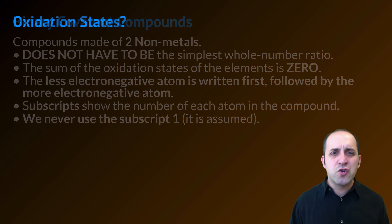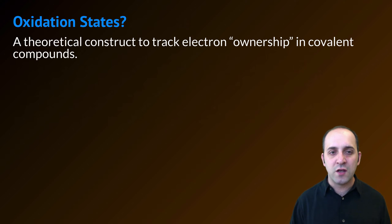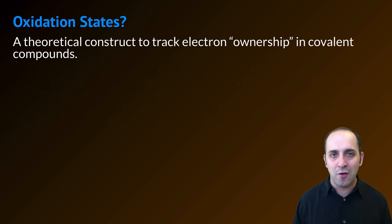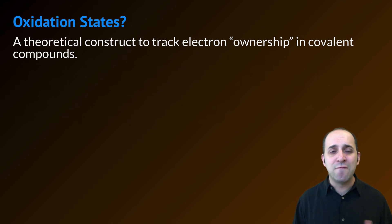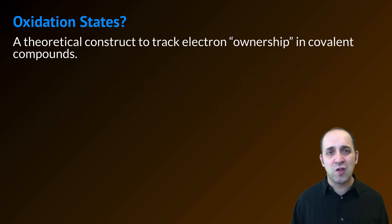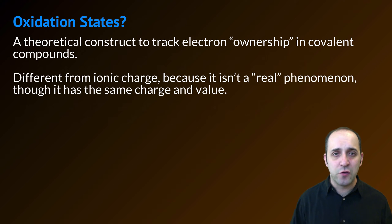Let's talk about oxidation states. An oxidation state is a theoretical tool we can use to track electron ownership in a covalent compound. Remember that in a covalent bond the electrons are being shared by all atoms. At the same time we need a way to figure out which atom brought which electrons to the party. Oxidation states help us do that.